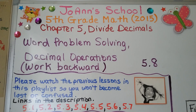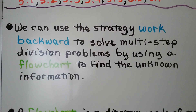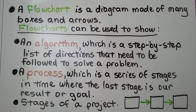Lesson 5.8: Word Problem Solving with Decimal Operations. We're going to work backward. We can use the strategy Work Backward to solve multi-step division problems by using a flowchart to find the unknown information. A flowchart is a diagram made of many boxes and arrows, and flowcharts can be used to show an algorithm — a step-by-step list of directions that need to be followed to solve a problem.